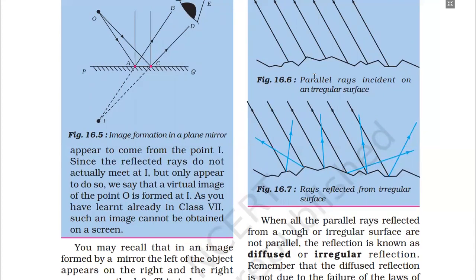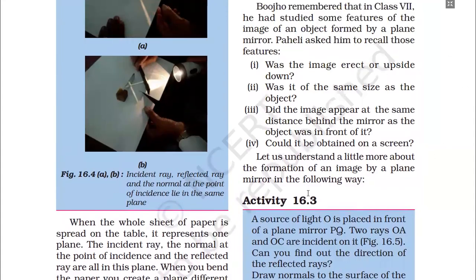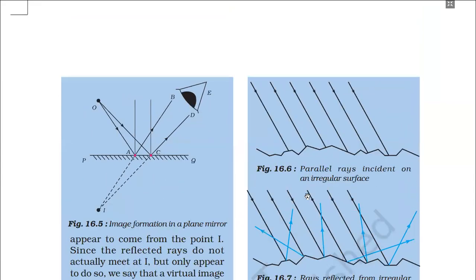Since the reflected rays do not actually meet at I but only appear to do so, we say a virtual image of point O is formed at I. Such an image cannot be obtained on a screen, as you learned in Class 7. This activity demonstrates how a plane mirror forms a virtual image.